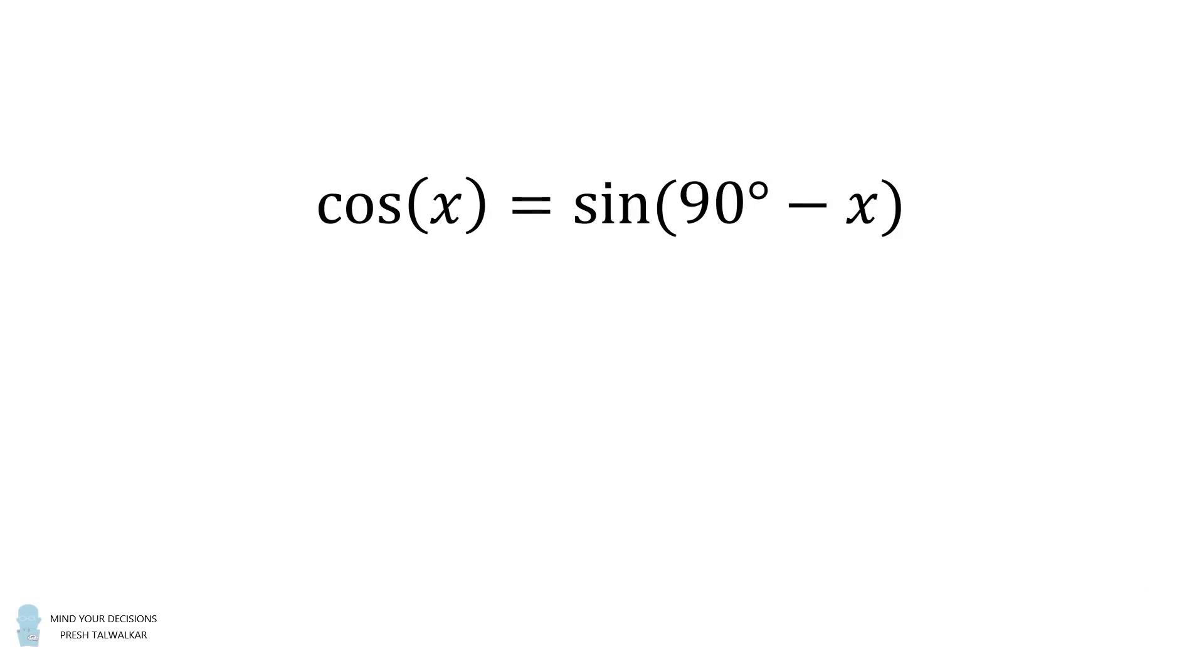Recall, cosine x is equal to sine of 90 degrees minus x. Squaring both sides of the equation gives cosine squared x is equal to sine squared of 90 degrees minus x.